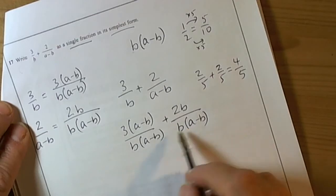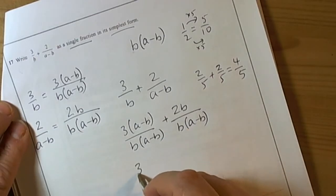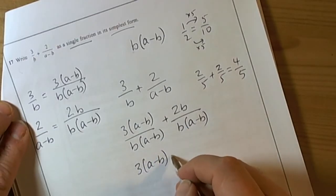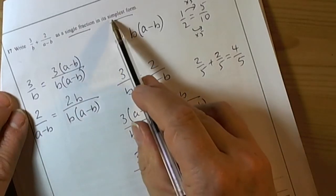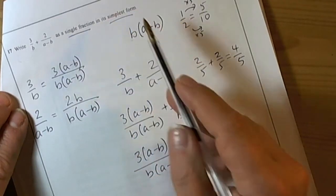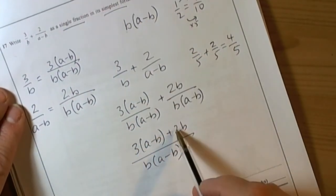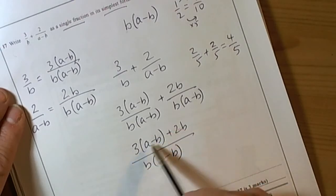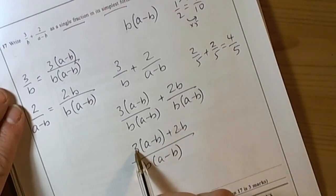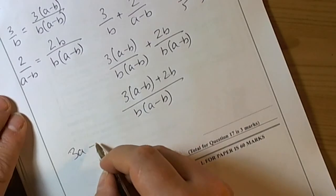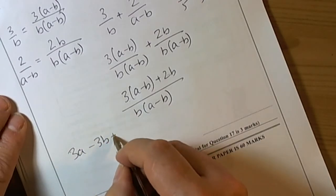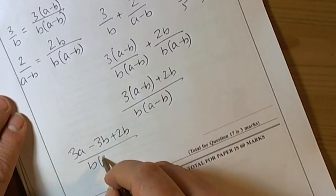The question says it wants the answer in simplest form, so we look to see if anything could be put together to get like terms. If we expand the bracket, we would have 3a take away 3b plus 2b all over the common denominator.